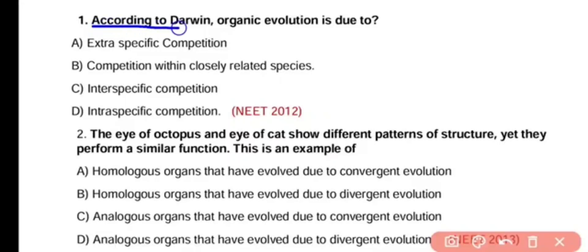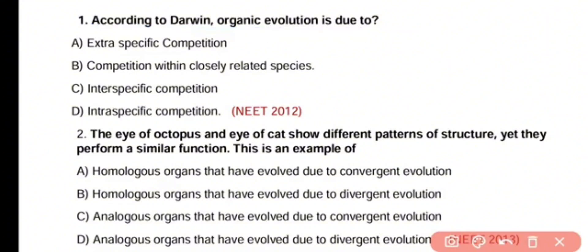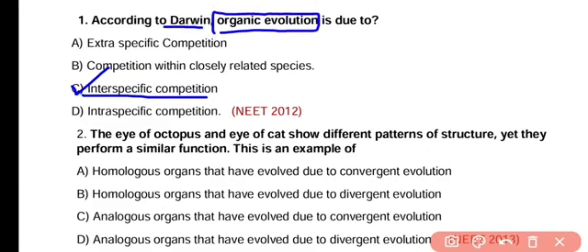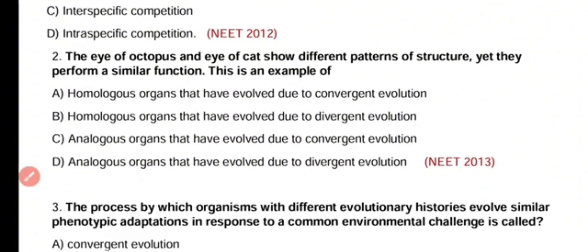Question number 1. According to Darwin, organic evolution is due to extra-specific competition, competition within closely related species, inter-specific competition, or intra-specific competition. The correct answer is option C. According to Darwin, inter-specific competition — competition between different species — leads to organic evolution.